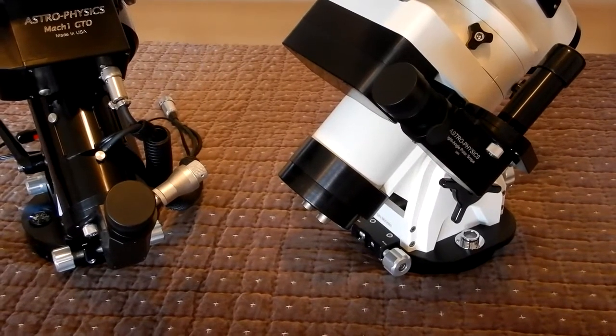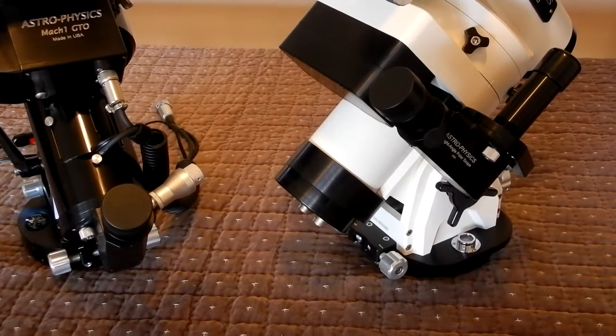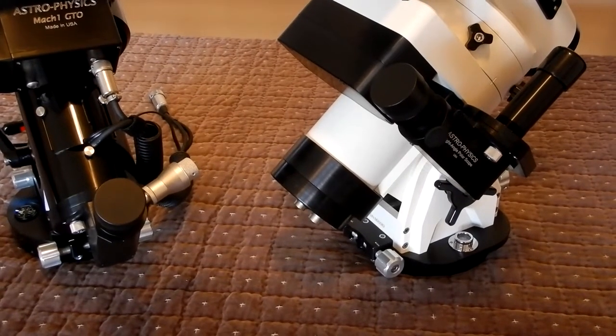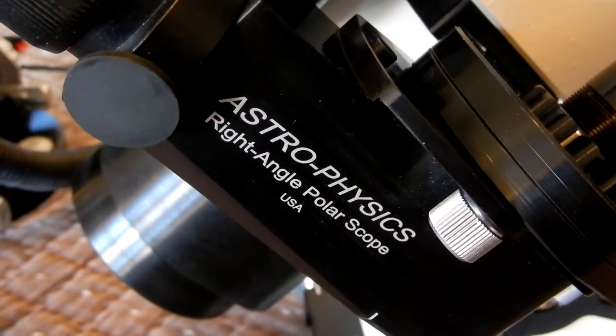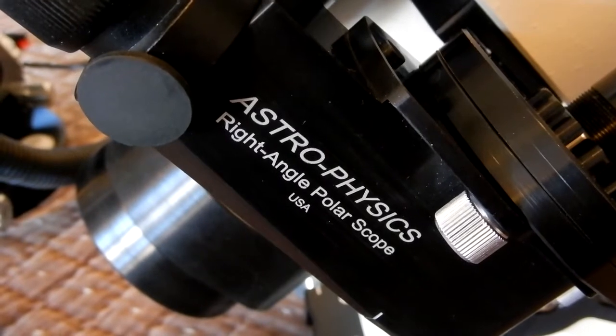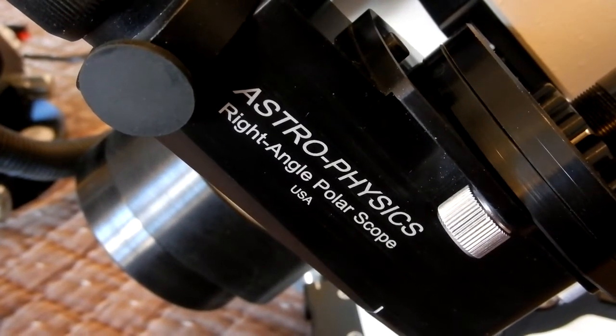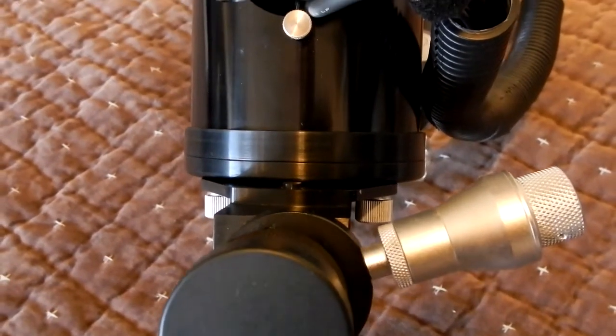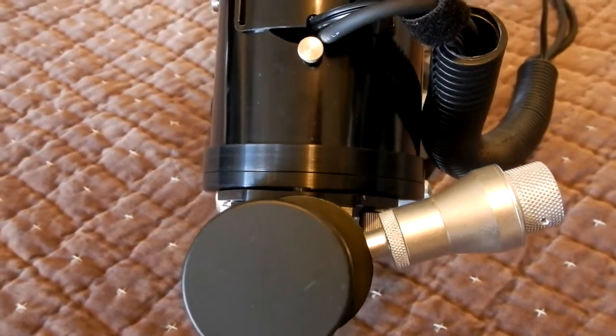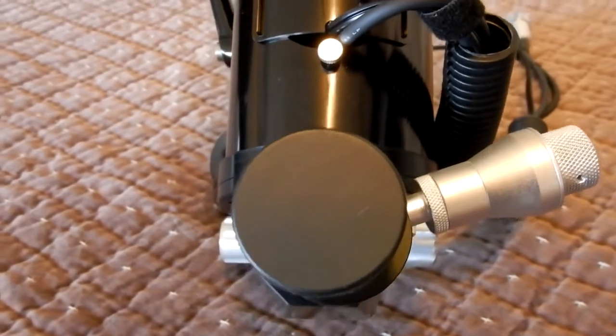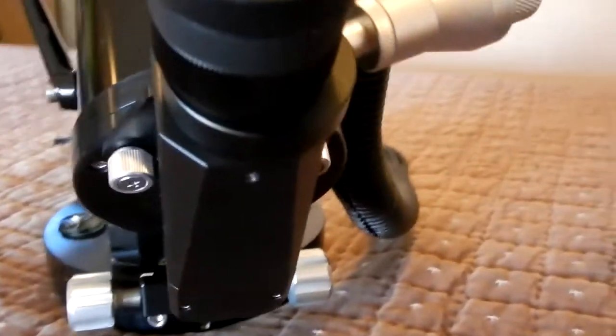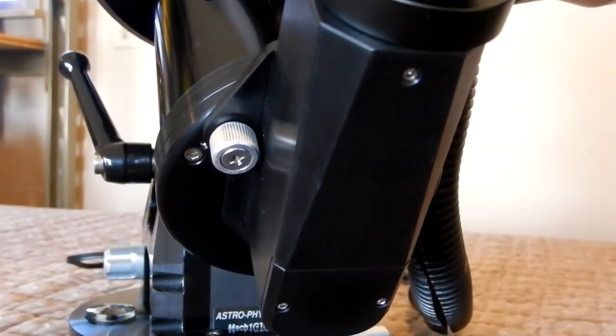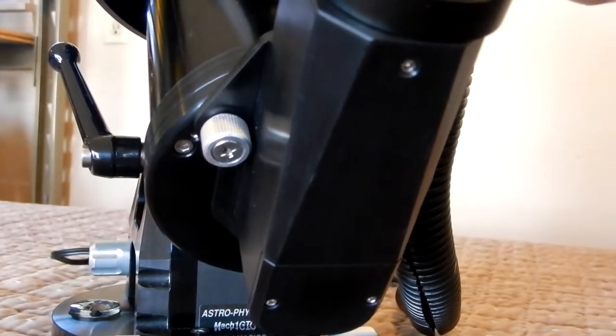All right, next let's take a look at the different way that the polar scope attaches to each mount. Both mounts are using the Astrophysics right angle polar scope. Now with the Mach 1, Tom had to buy an adapter that allowed the polar scope to attach to the bottom end of the right ascension axis.